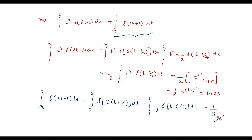Adding the two parts together: 1.125 + 1/3 ≈ 1.125 + 0.333 = 1.458. This is the final answer for the fourth integral. Thank you for watching.